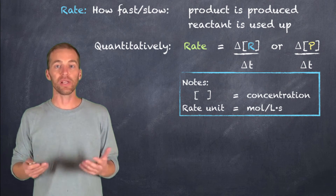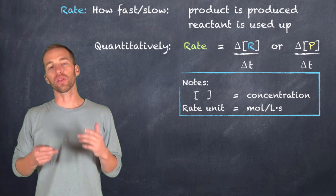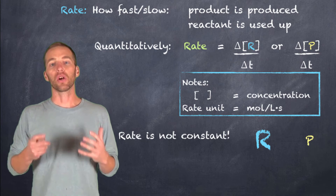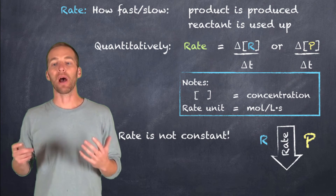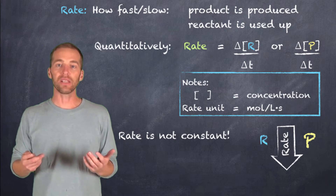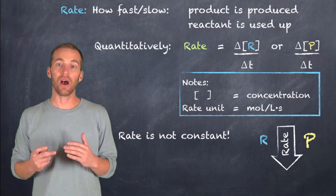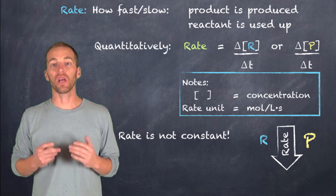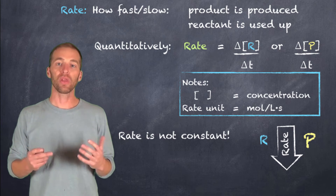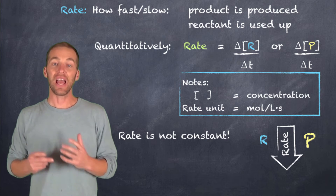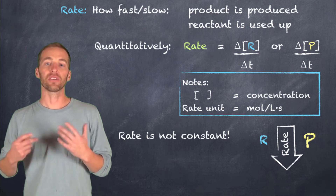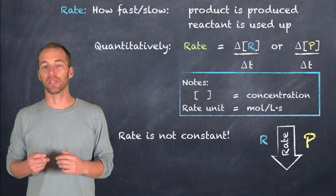It's important to note that the rate is not constant. As we go through the reaction, the concentration of reactants is going to decrease while the concentration of products increases. The rate of consumption of the reactants will go down because more and more of the reactant is being used up, leaving less and less remaining. So the rate of the reaction is going to slow — both in the use of the reactant and in the production of the product — as long as we don't add more reactant.